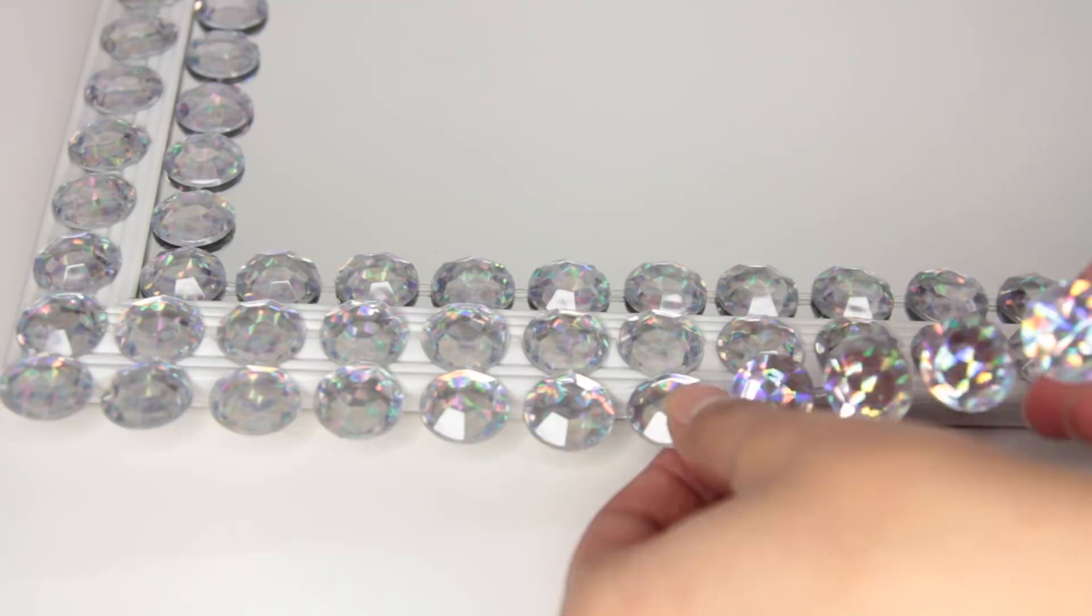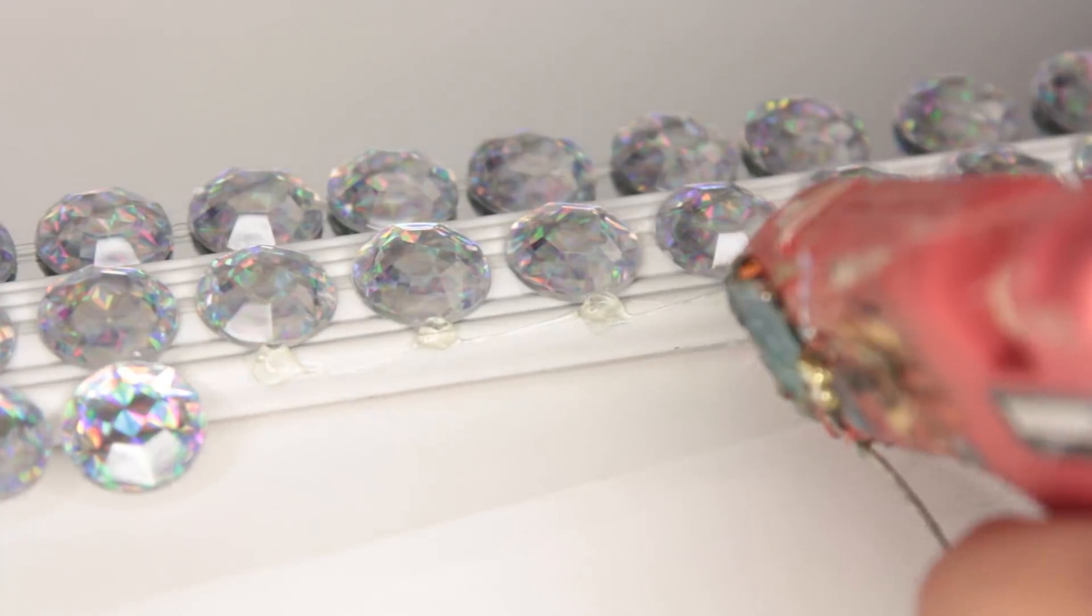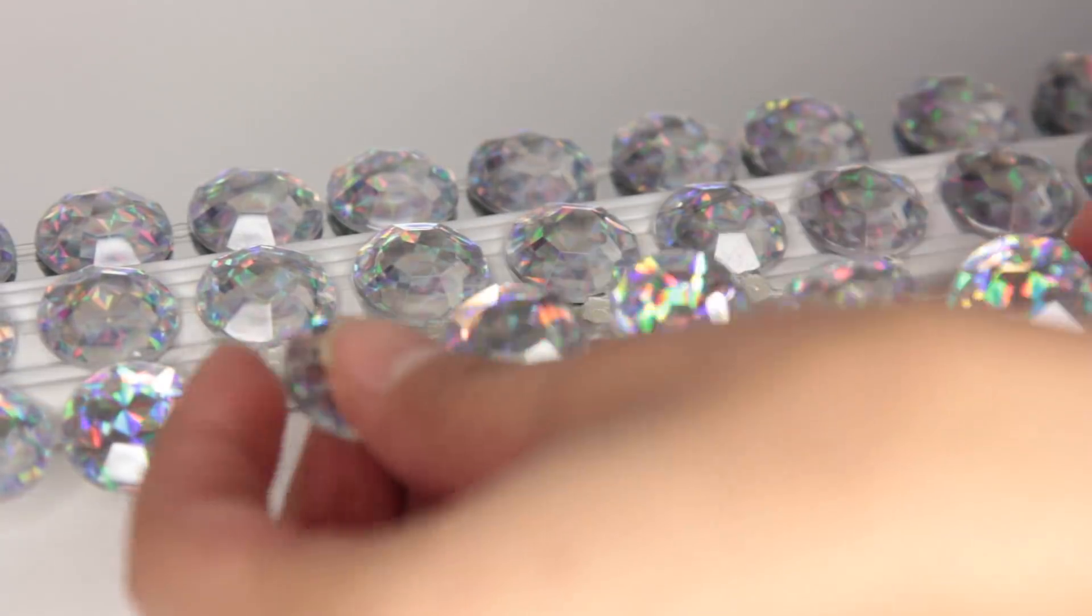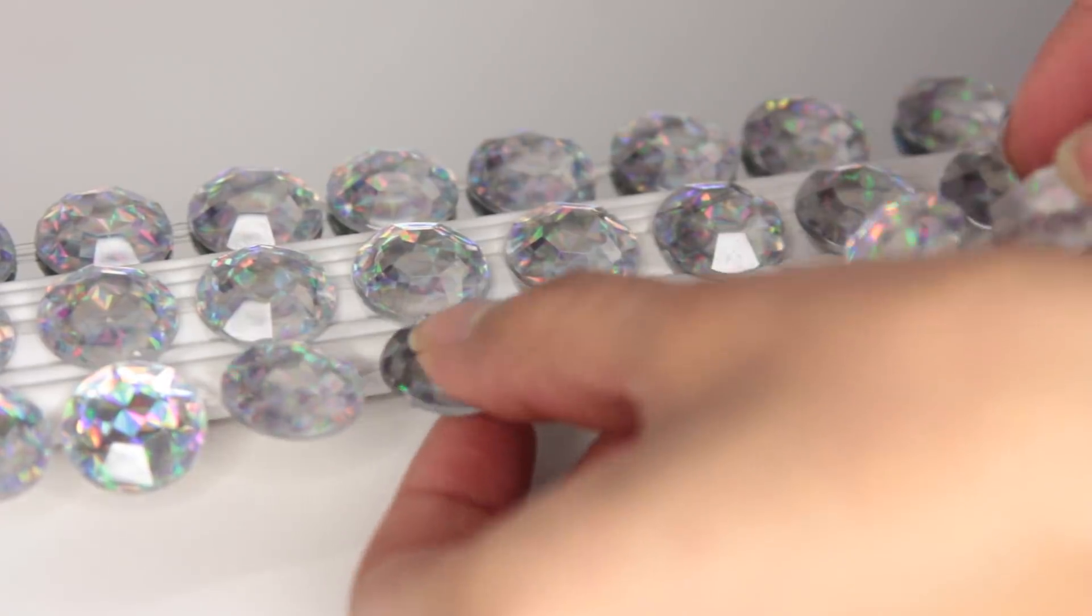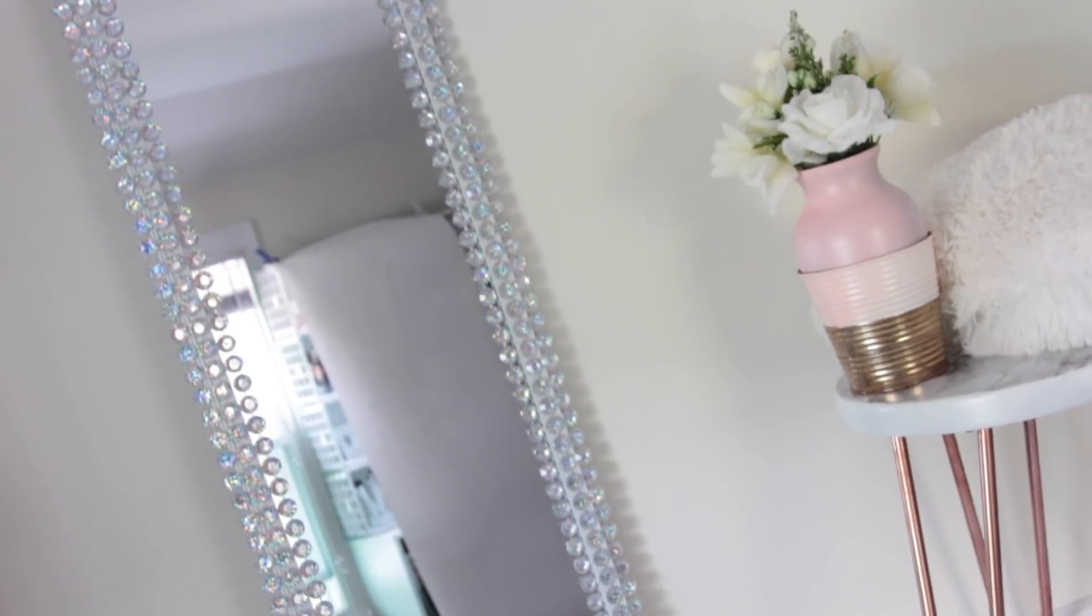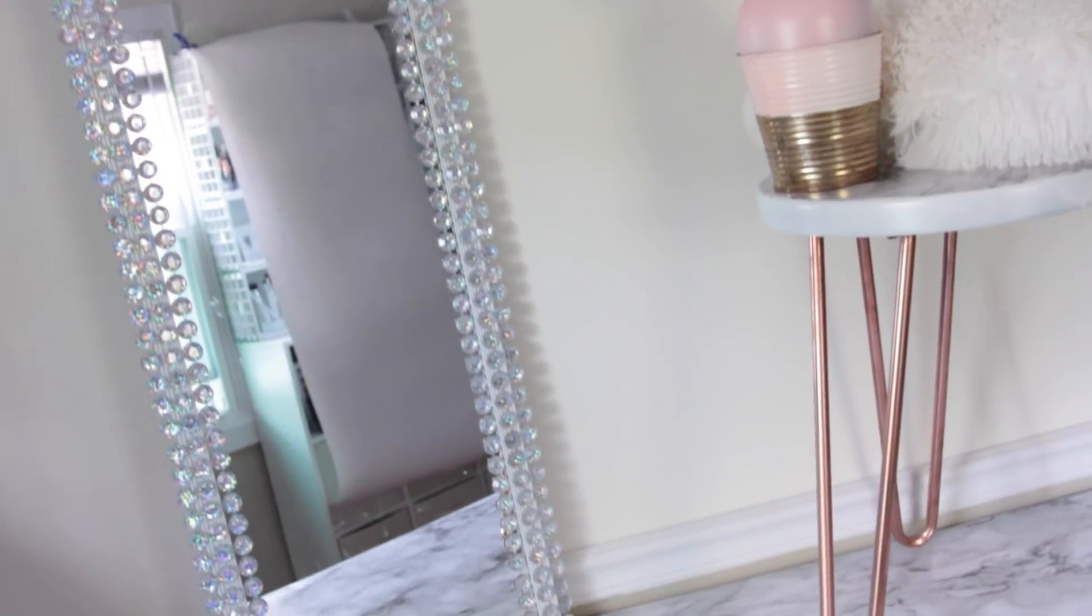I want to say if you use hot glue, you have to handle the mirror with care. Hot glue isn't a very heavy-duty glue, so the gemstones might fall off. If you use like E6000, the gemstones will stay in place. I'm just saying if you use hot glue gun like I did, you just want to handle the mirror with care when you're holding it by the sides.